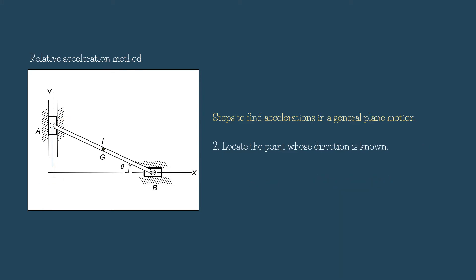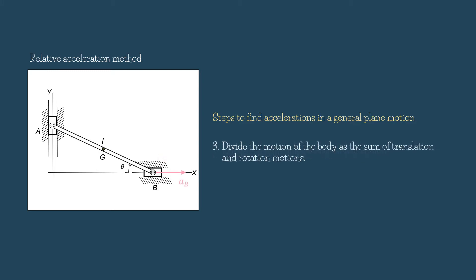Step 2: Locate the point whose direction is known. We know that point B is moving to the right. We don't know whether slider B has acceleration or deceleration, so let's assume that it has an acceleration to the right.